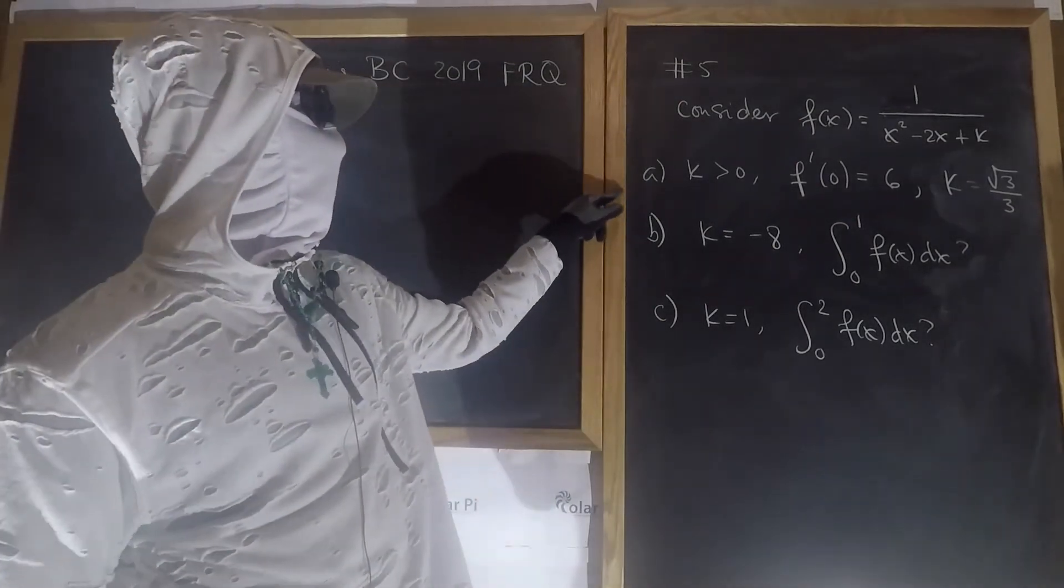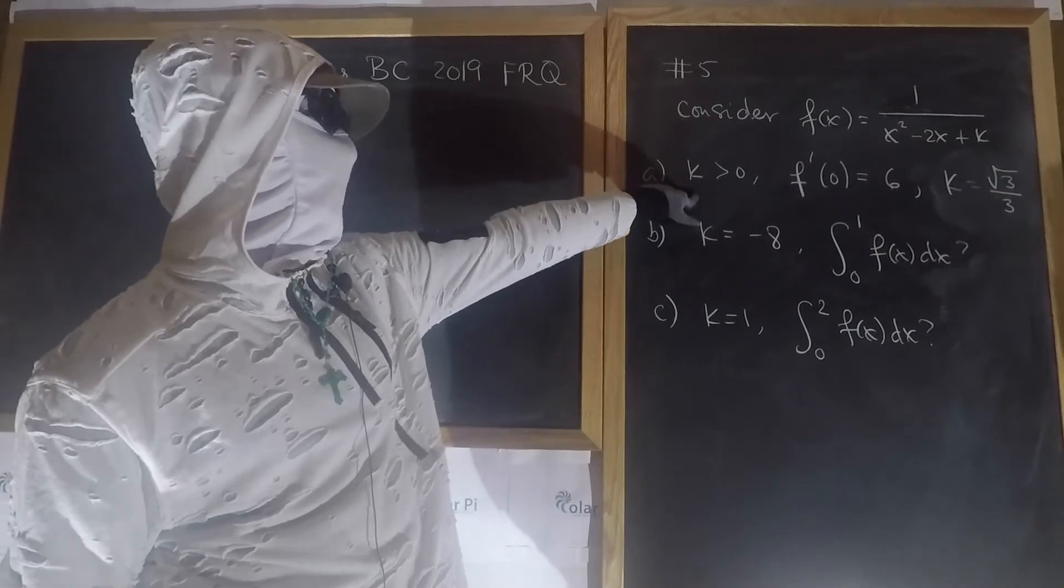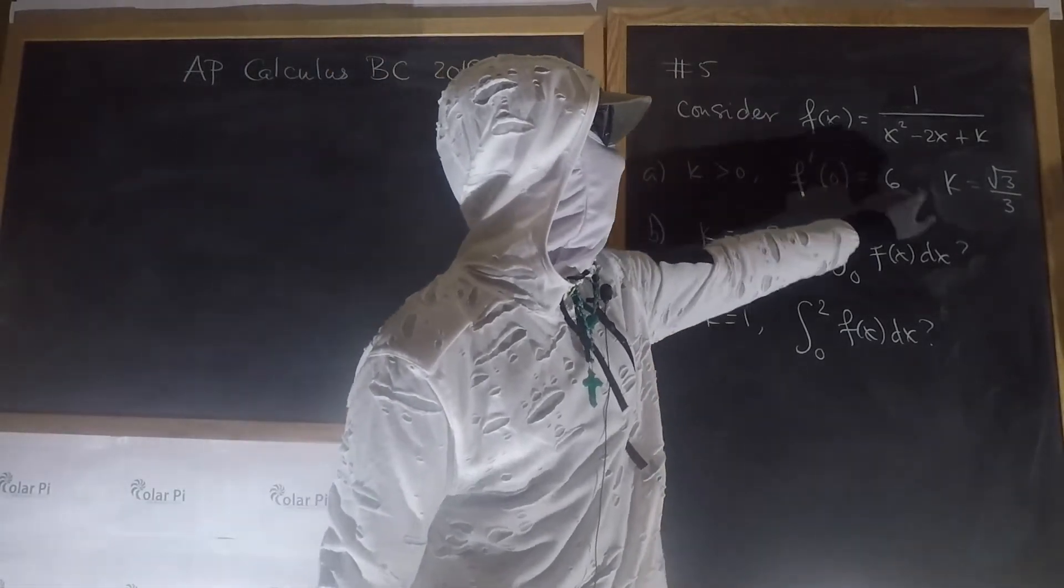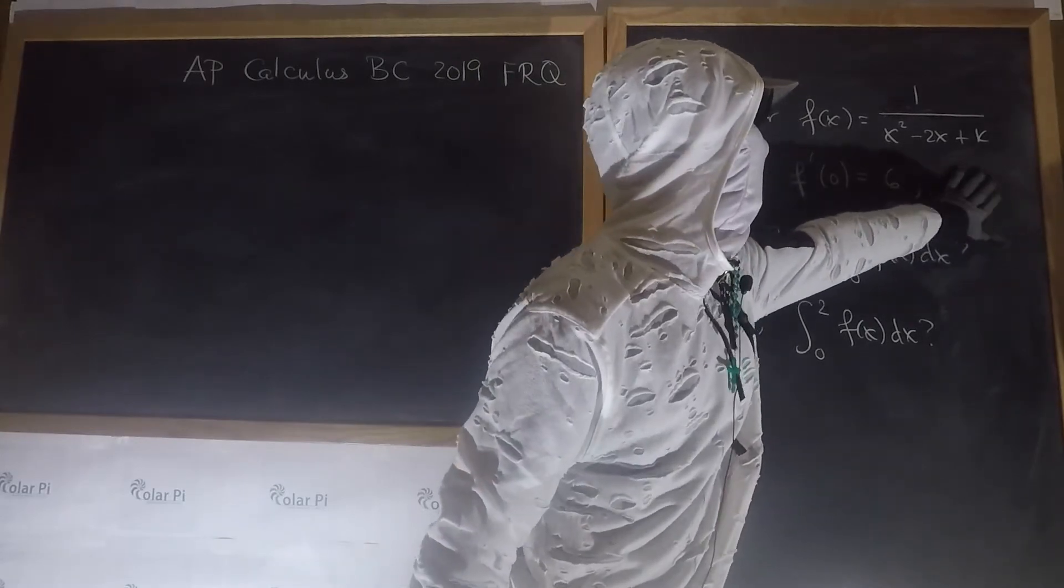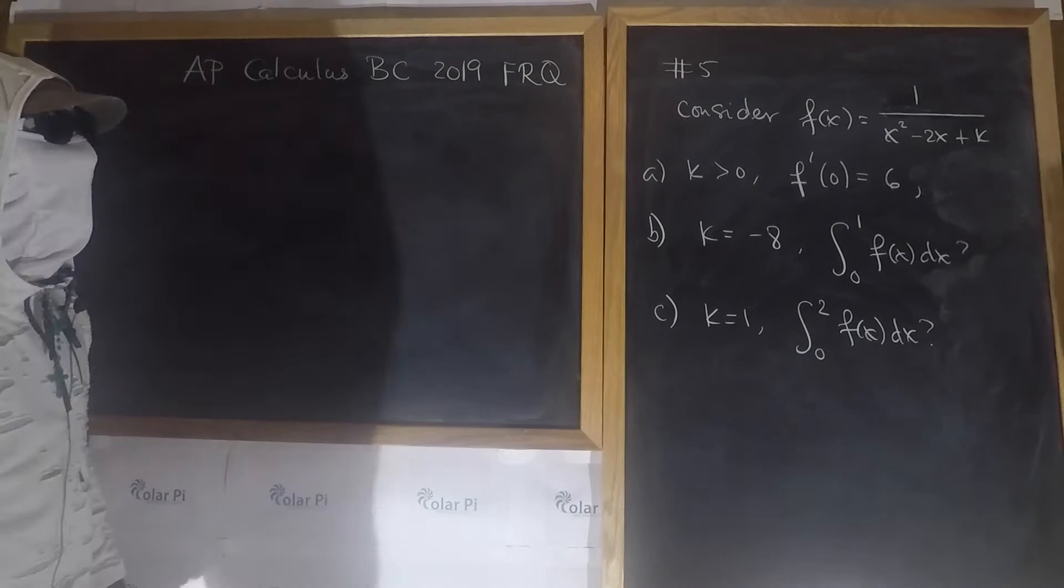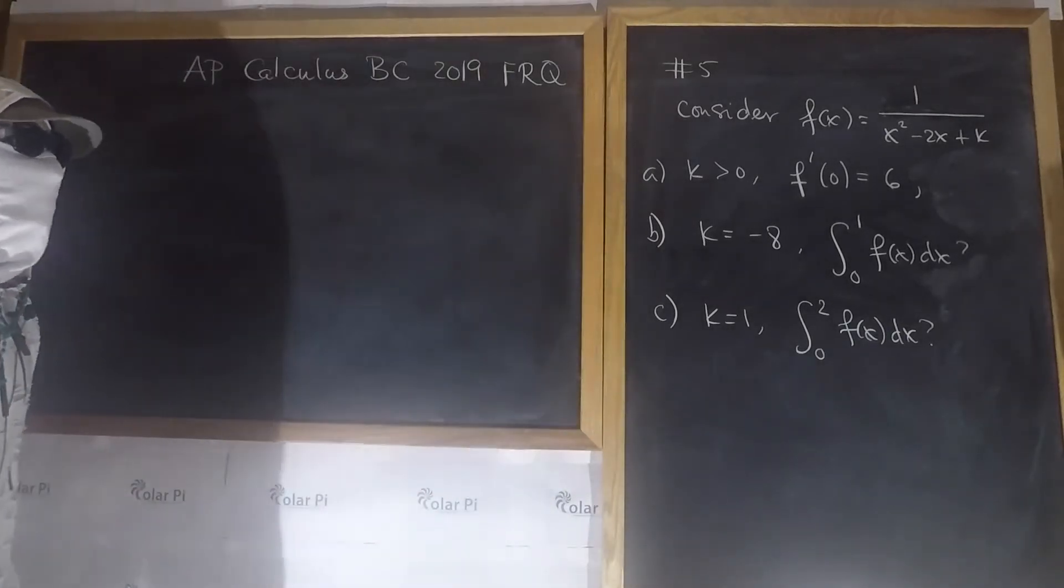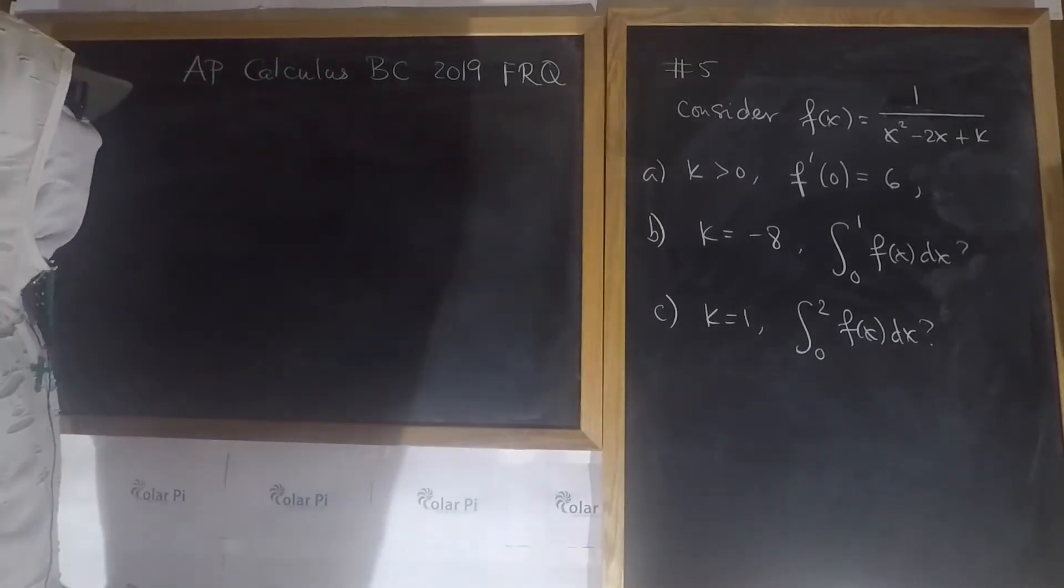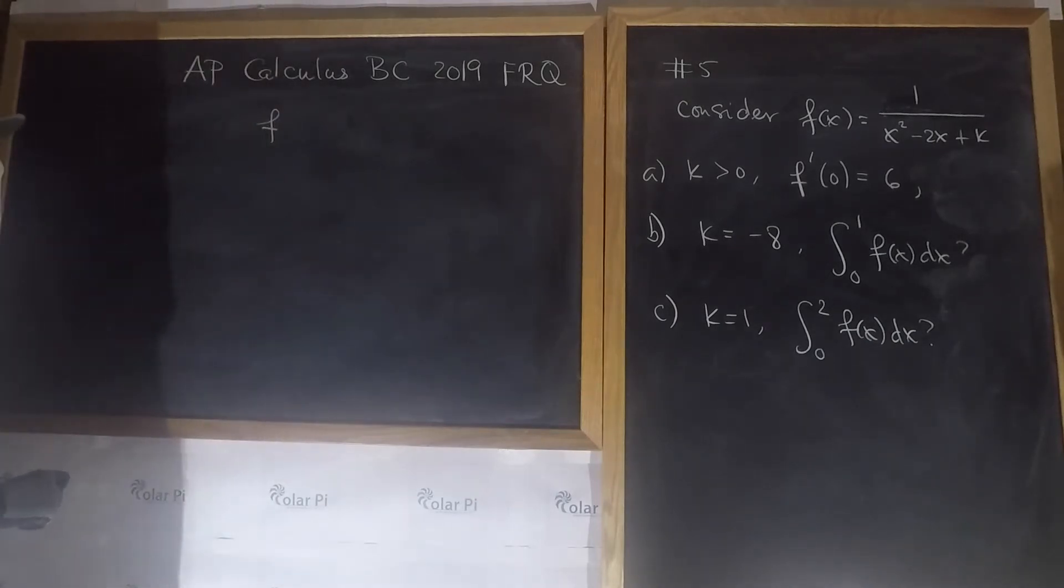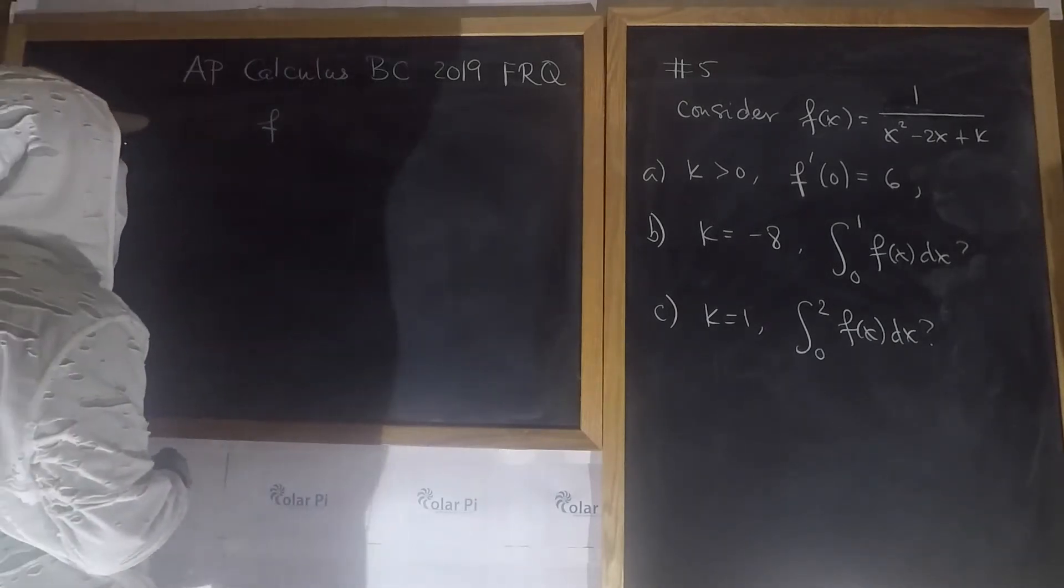With that said, in part A, we're told that k is bigger than 0, and the slope of the tangent line to f at x equals 0 is 6, and so we have to figure out what k is. This is pretty straightforward. We have to figure out what f prime is, and then plug in 0 and set it equal to 6, and hopefully that allows us to figure out what k is.